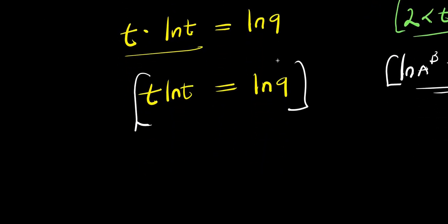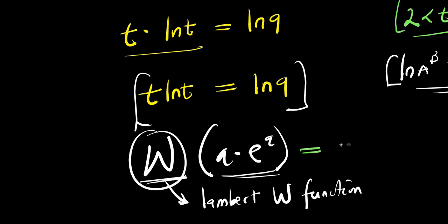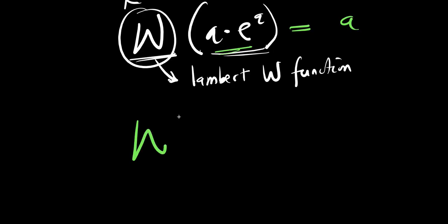What we can do at this point is to apply the Lambert W function which is represented with capital letter W. And for you to make use of this Lambert W function you must have an expression such as a times e power a. It must be in this format and once you apply it here the result will be x.